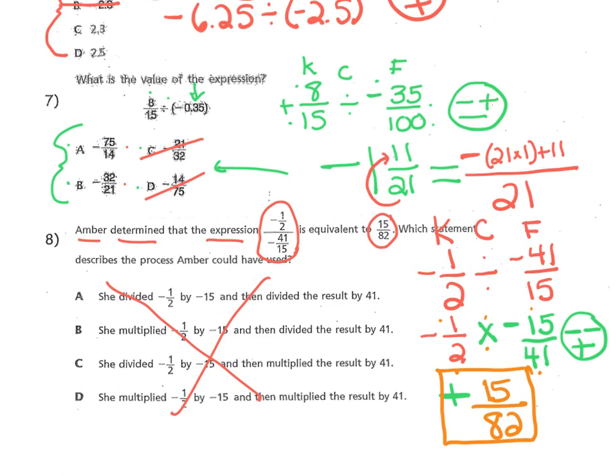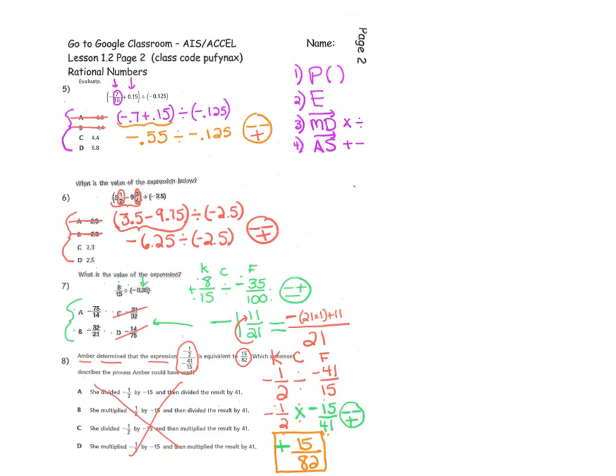Now, we're going to check our answers. You should have completed 5, 6, and 7. Here are the answers. Please grade your paper. For number 5, you should have gotten choice C. Give yourself a check if you got it right. For number 6, you should have chosen choice D.